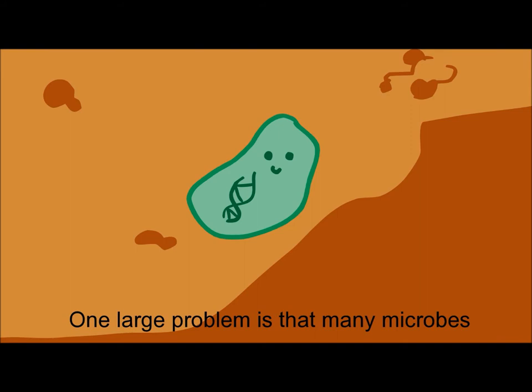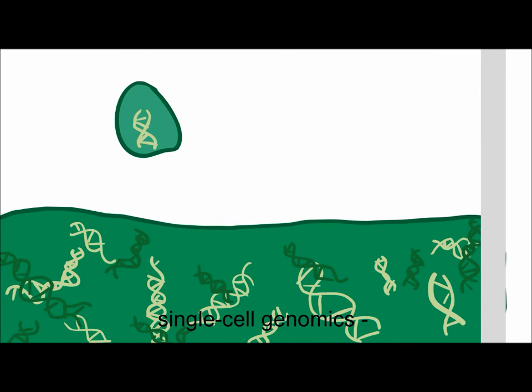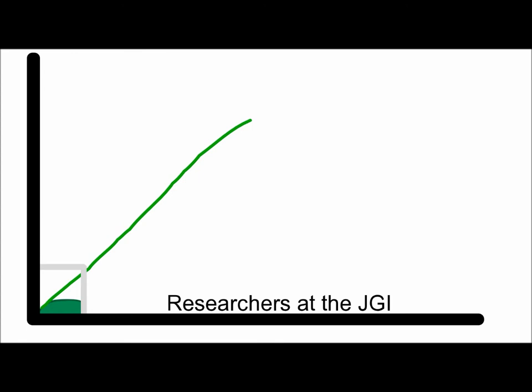One large problem is that many microbes are unable to grow outside of their natural environment. This problem is overcome by single-cell genomics, only needing one single cell to access a genome.